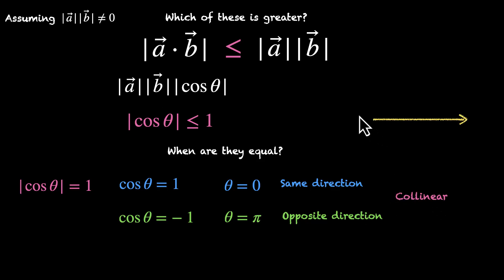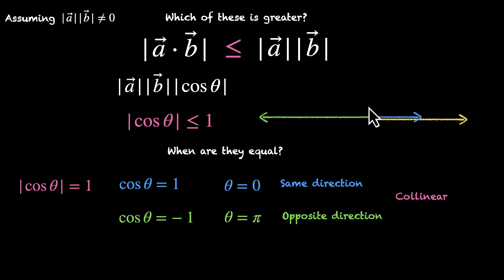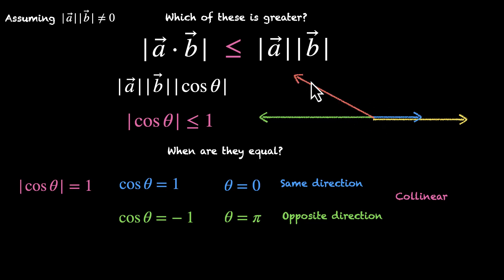Here's a visual. If this is vector A and this is vector B facing the same direction, the angle between them is 0. If they're facing the opposite direction, the angle between them is 180 degrees. In both cases, these vectors lie along the same line — they are collinear. In any other scenario, for example if vector B is at an angle, the angle between them is not 0 and not pi. This means cos theta will be something less than 1, which means the left-hand side will be less than the right-hand side.